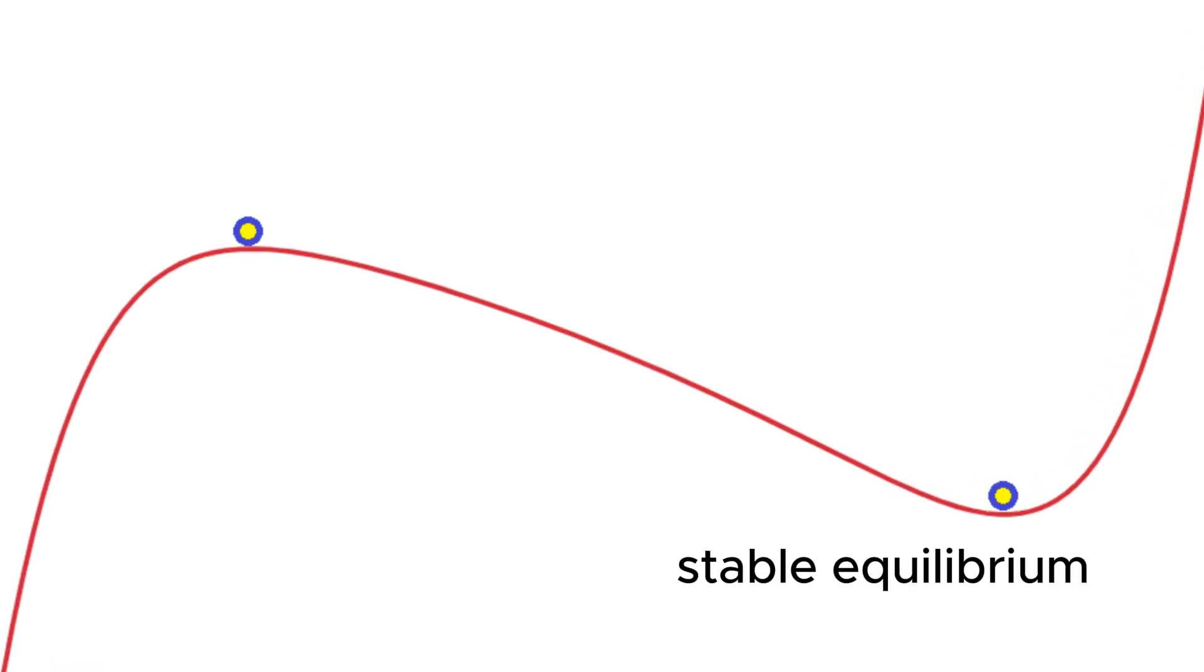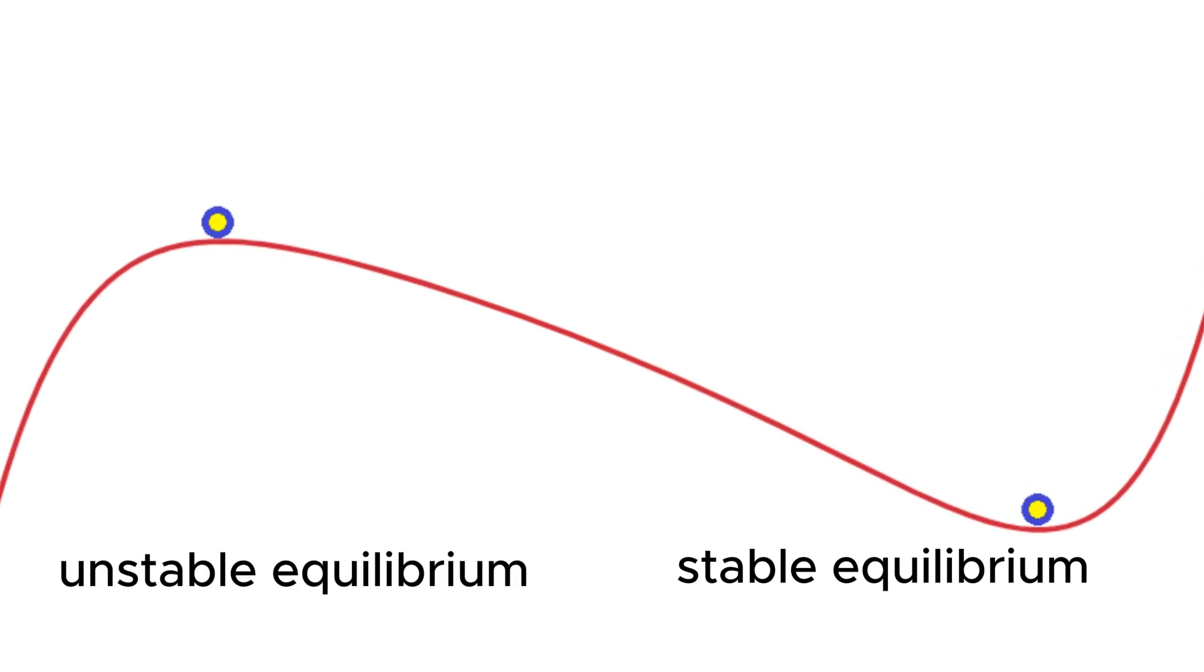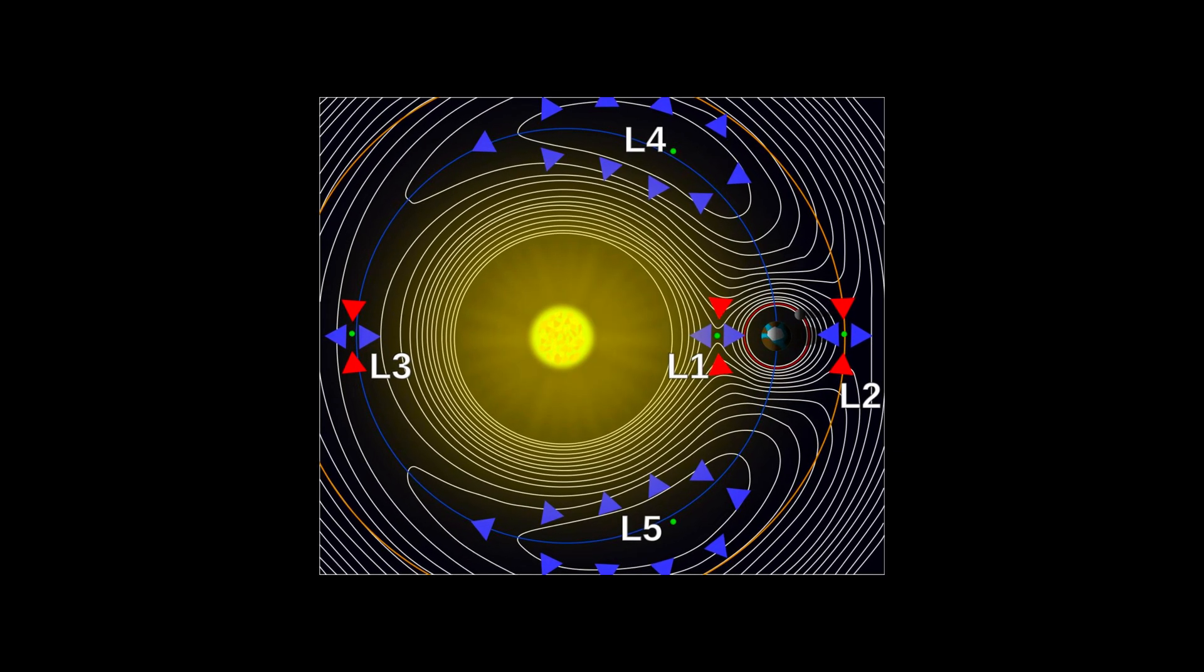Therefore, the solution on the right is called stable equilibrium, while the one on the left is unstable equilibrium. The same is true for Lagrange points.